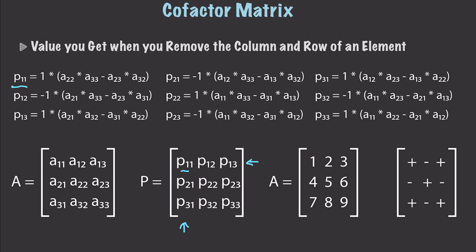Likewise, if we were trying to get another value, we'd get rid of that whole column and that row, then use what is left to create a matrix and find the determinant. Hopefully that is not too complicated to understand.